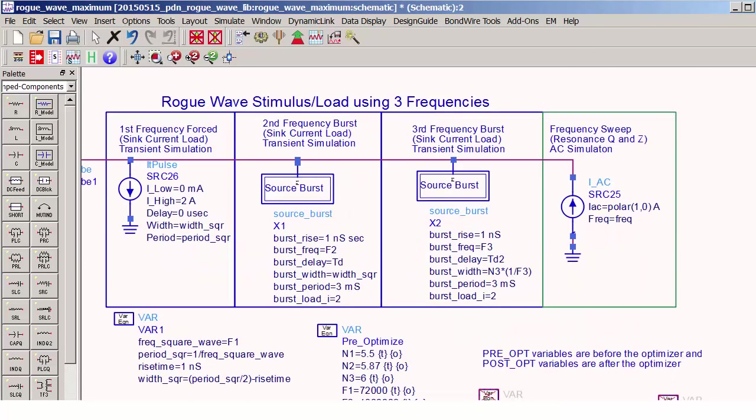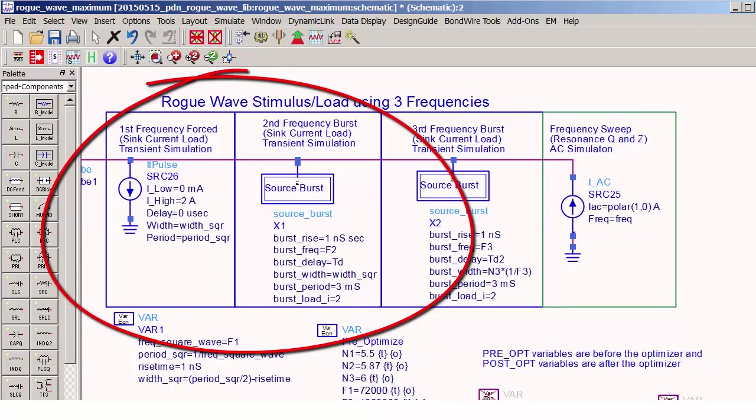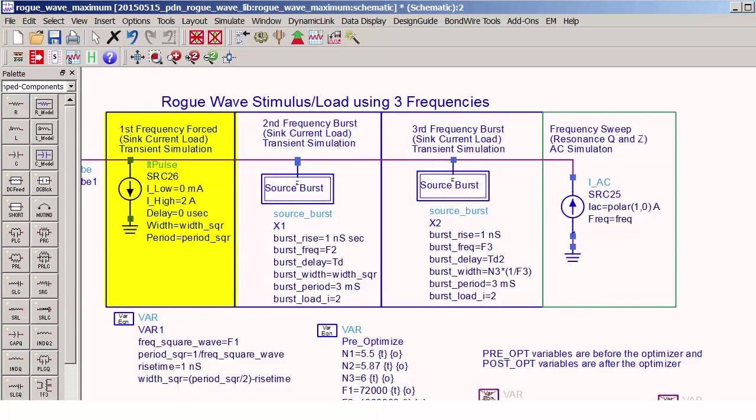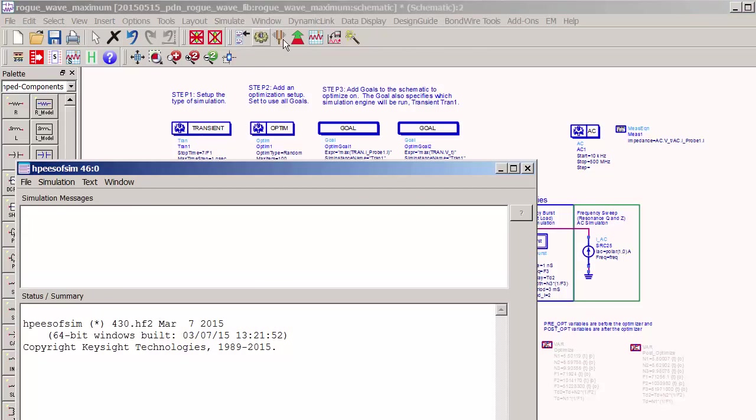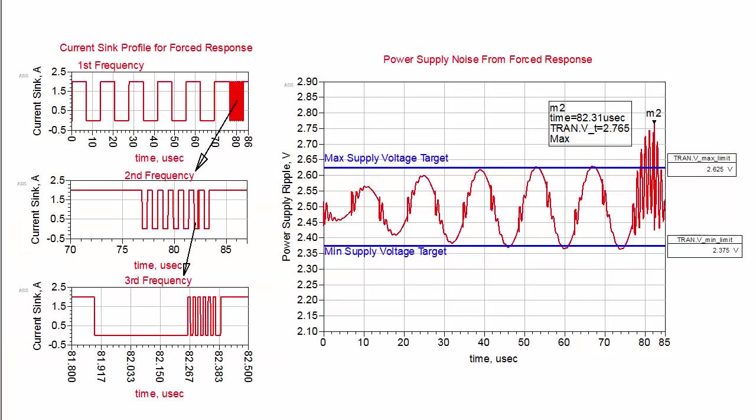Our load circuit is comprised of two square wave pulse sources, each switching from 0 to 2 amps. The first is set to the approximate resonant frequency and runs continuously throughout the simulation. After a delay, the second frequency is introduced and also runs continuously throughout the simulation. After a delay, the third frequency is introduced as a six-cycle burst. This method makes it easier to constrain the maximum current and also reduces the simulation time. Simulating this initial solution results in a rogue wave indicated by the larger-than-expected amplitude.